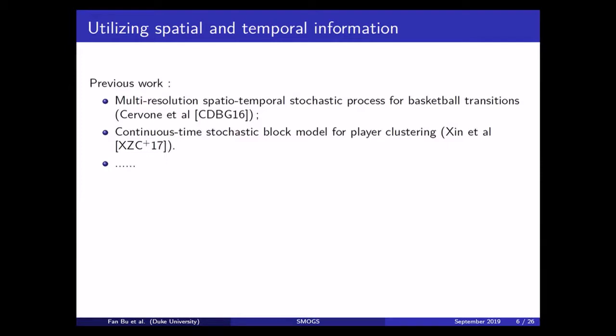And of course, people have done research works in utilizing spatial and temporal information from basketball. One example is the 2016 paper by Dan Cervone and collaborators, which developed a multi-resolution stochastic spatial temporal process framework for the transition events in basketball games. And another example is this 2017 paper by Lu Xin et al. which used a continuous time stochastic block model to group players together according to their functionalities on the team.